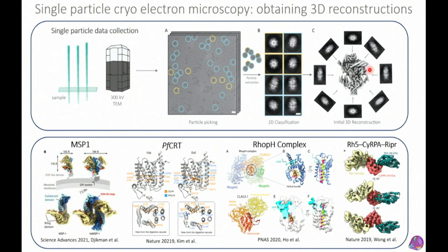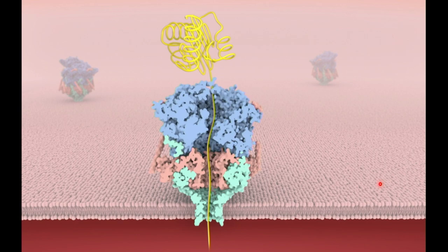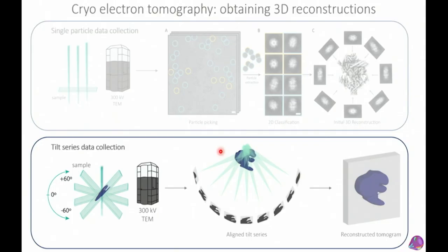Many cool structures have recently come out from malaria parasites using this technique — including the beautiful MSP1 structure, the PFCRT structure, the RH5-PfRipr complex from Alan Kalman's group in Australia, and of course my personal favorite, PTEX. These structures are super cool and we learn a lot from them, but we don't get the cellular context — just the protein by itself.